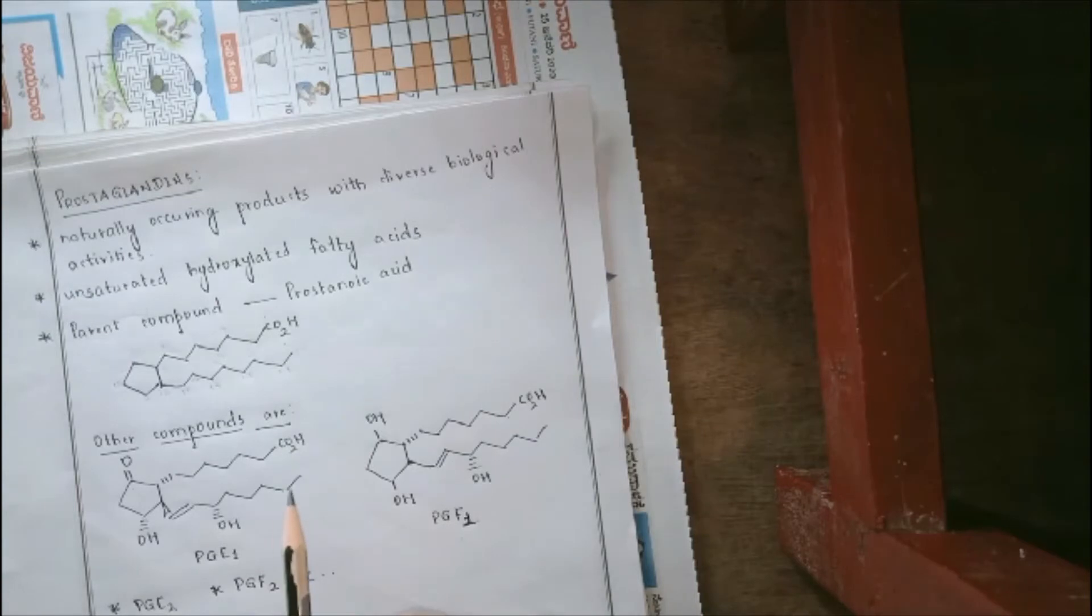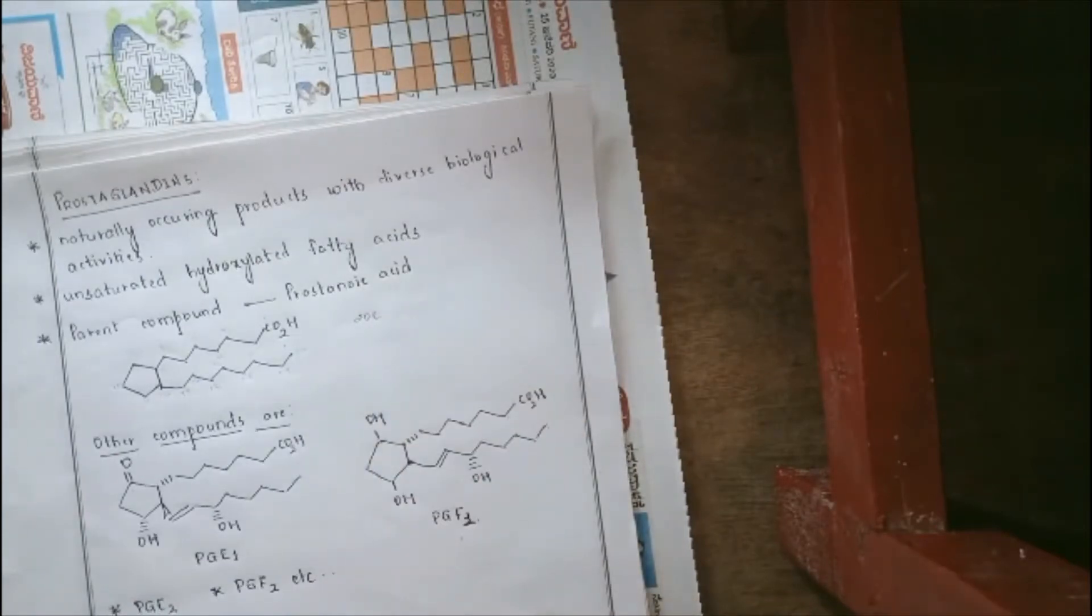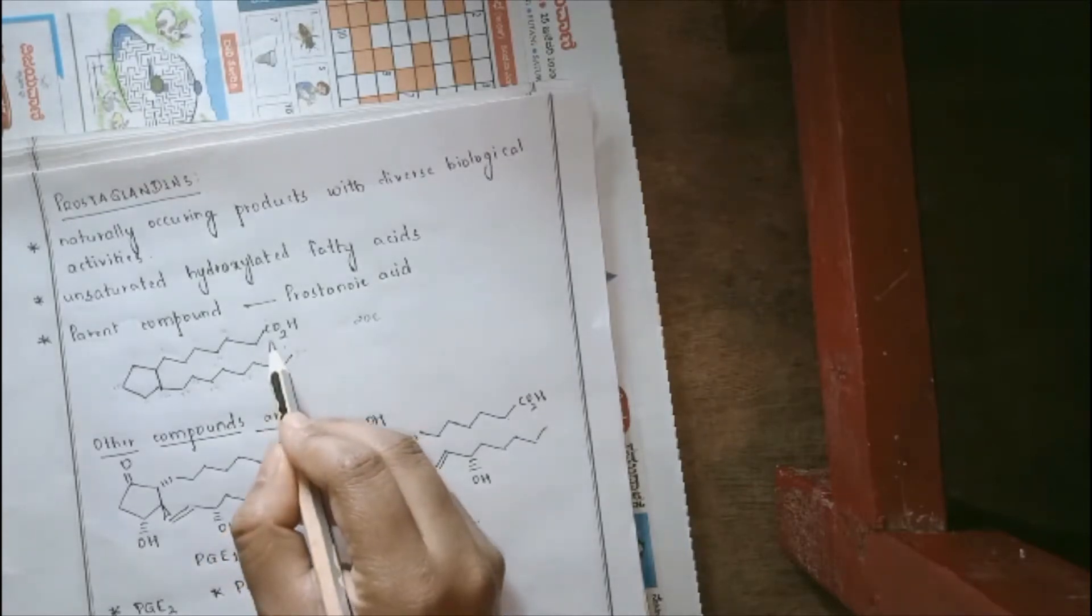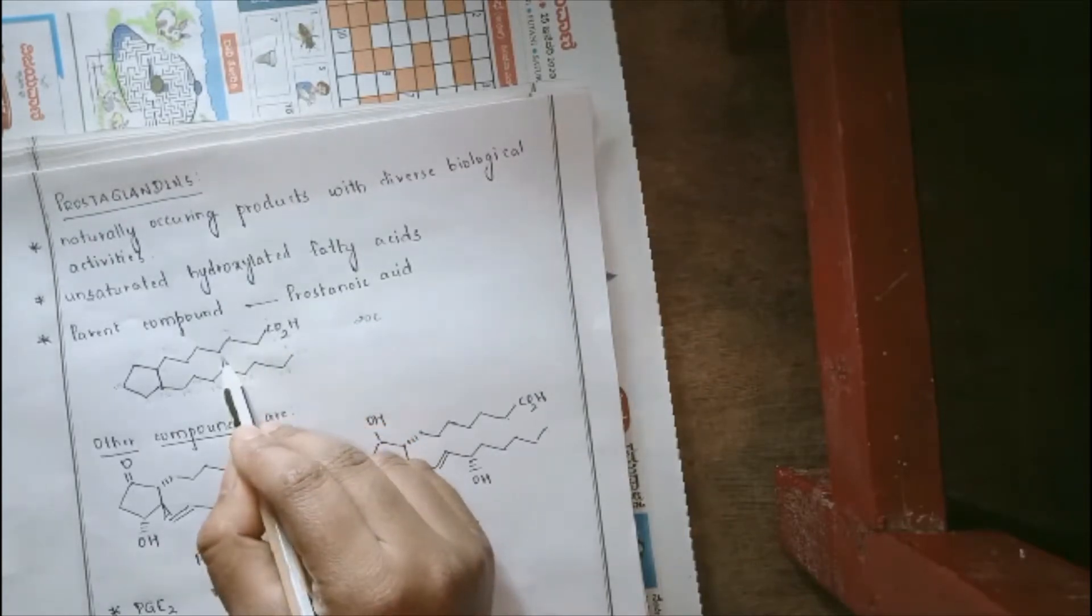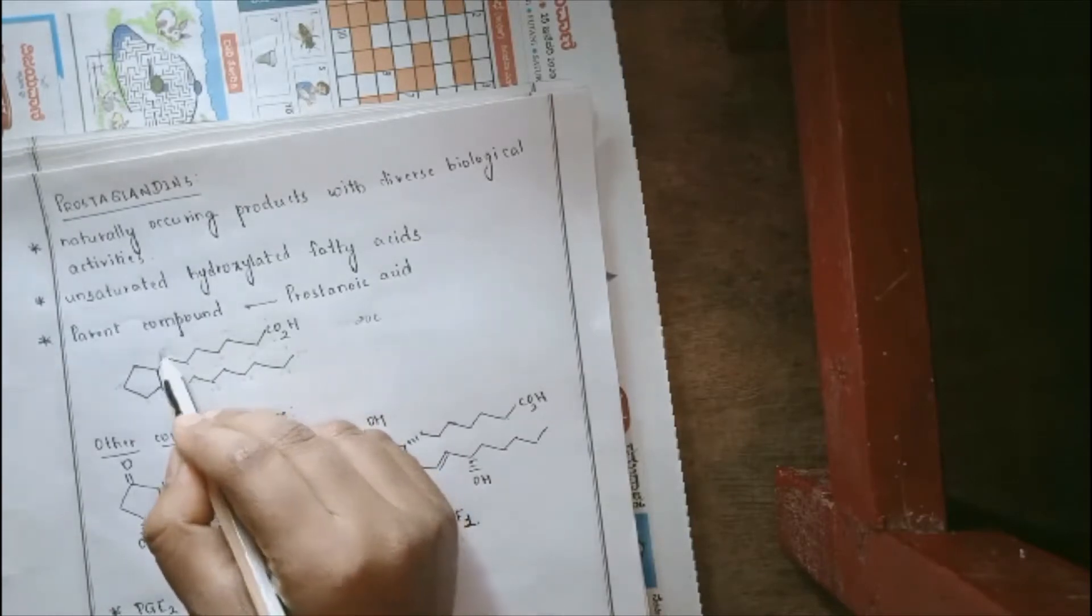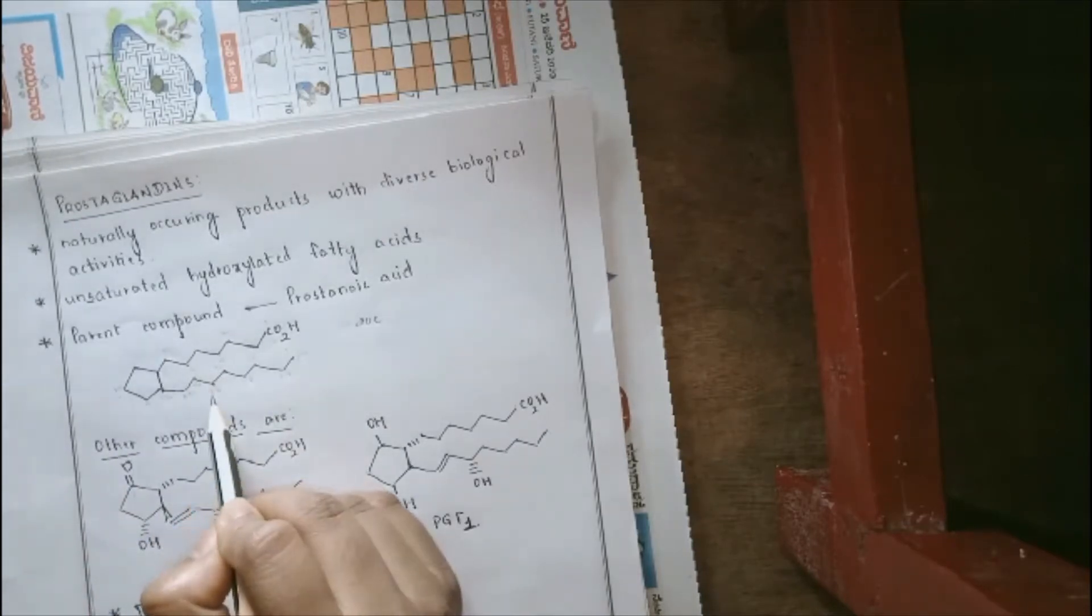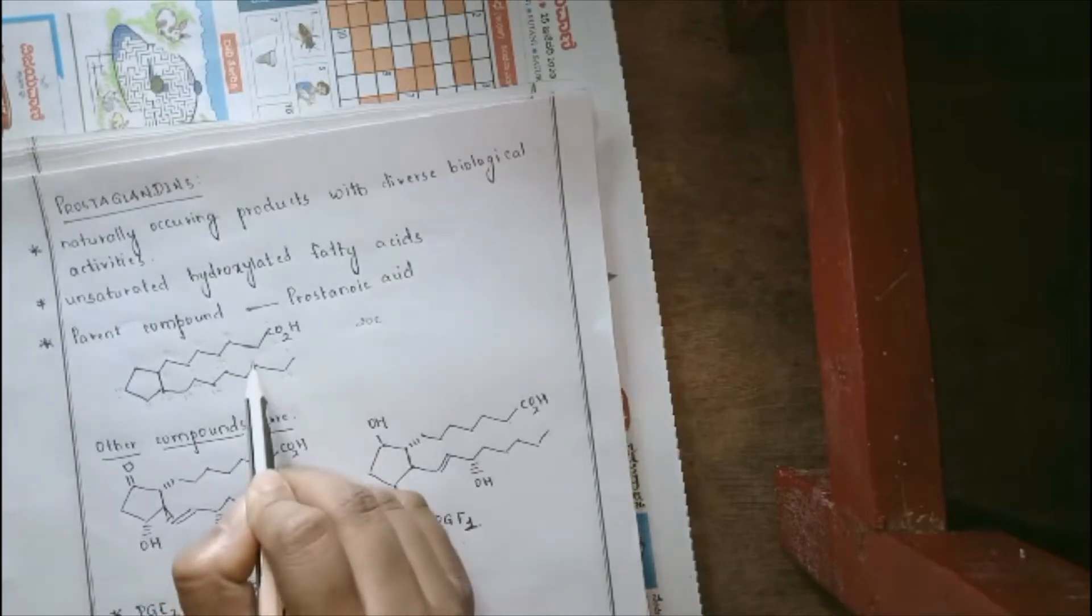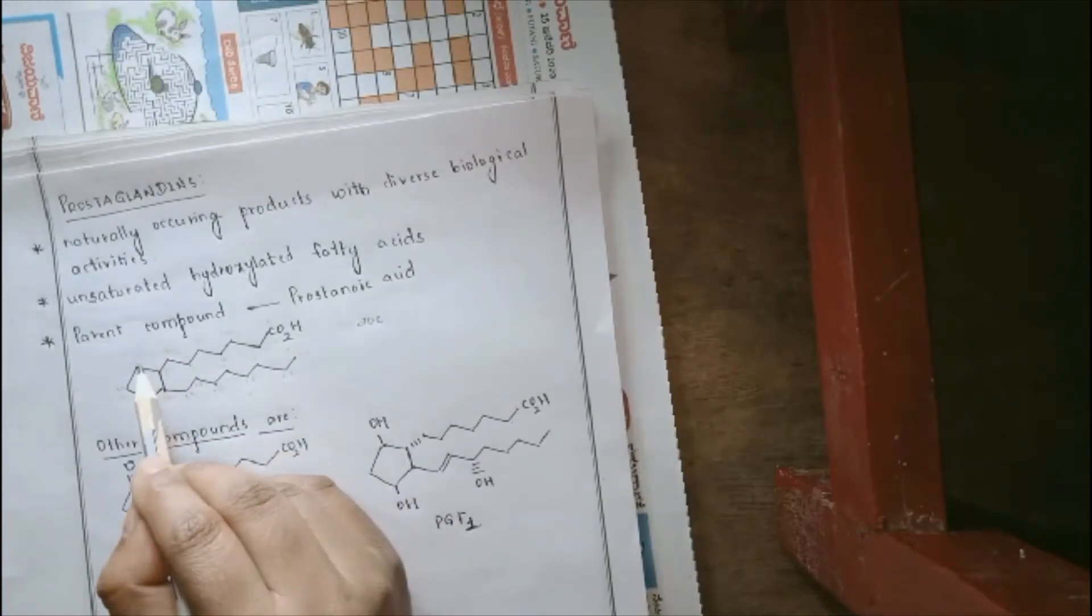So generally, in these fatty acids, we can see that there is a presence of 20 carbon atoms. Now, these 20 carbon atoms could be given numbering as follows. We have to start with carboxylic group that is 1, 2, 3, 4, 5, 6, 7, 8, 9, 10, 11, 12, 13, 14, 15, 16, 17, 18, 19, and 20. The numbers 8, 9, 10, 11, 12, they form a part of cyclopentane ring.